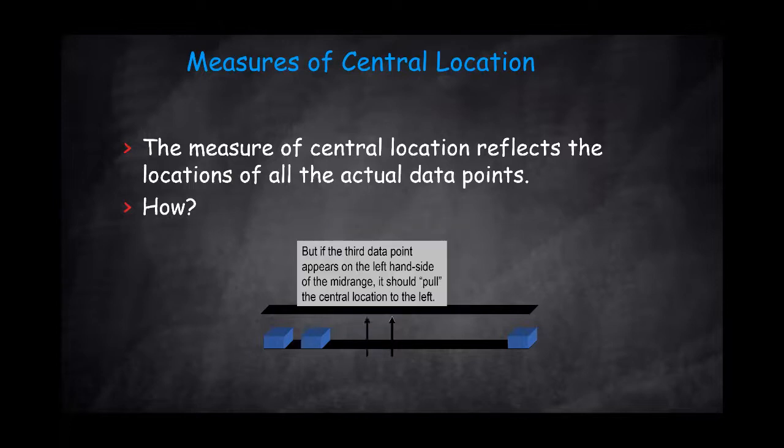But when we're adding a third point, you can see in this scenario we added a point to the left-hand side. And what happened is that now we have two points on the left-hand side and one point on the right-hand side. So the central location is being pulled to reflect the majority of the points, which are on the left-hand side. The central location will be pulled to the left.